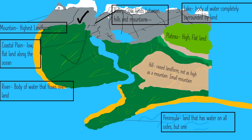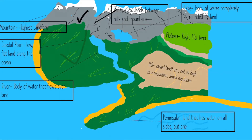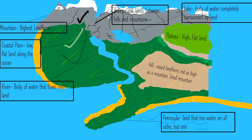Next, river: a body of water that flows over land. This is our river — I'll draw the path it's going here, and then it ends here at the ocean. We'll talk about that later.